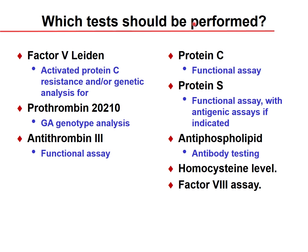Tests for thrombophilia workup include: factor V Leiden mutation and activated protein C resistance testing or genetic analysis; prothrombin G20210A genetic analysis; antithrombin 3 functional assay; protein C functional assay with antigenic assays if indicated; antiphospholipid antibody testing; homocysteine level; and factor VIII, IX, or XI levels to identify which factor may be elevated.